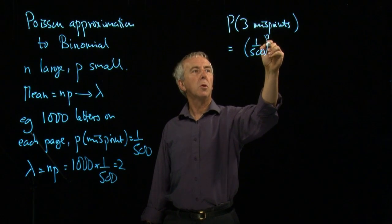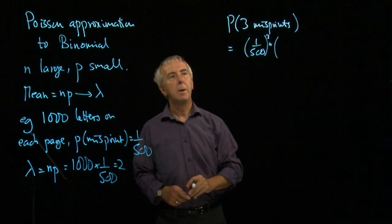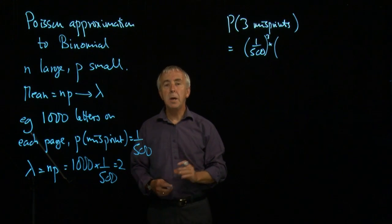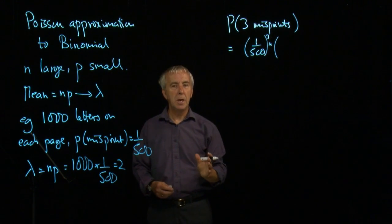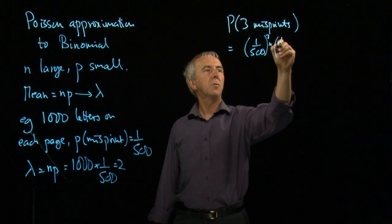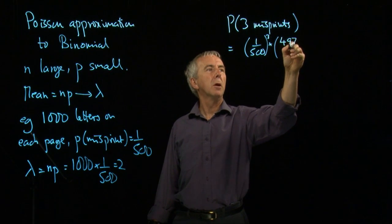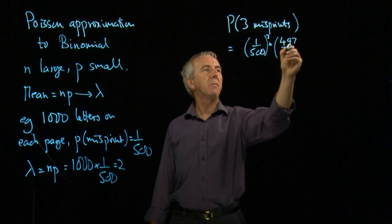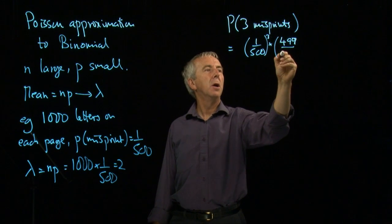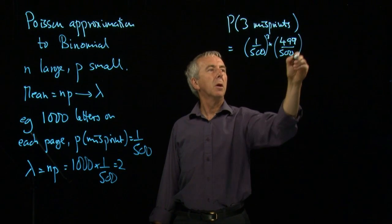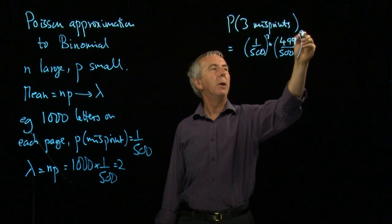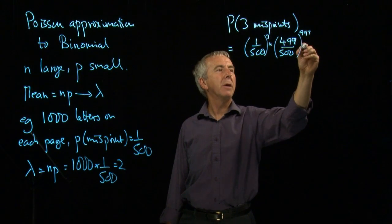We want the other 997 letters to be correct. And the chance for each one of them of being correct is 499 over 500. And we want that to the power 997.